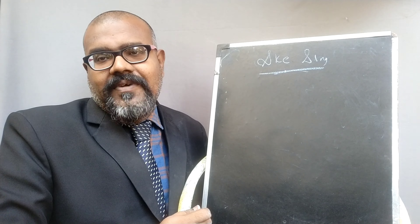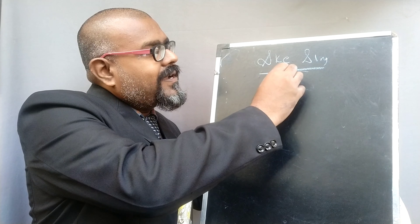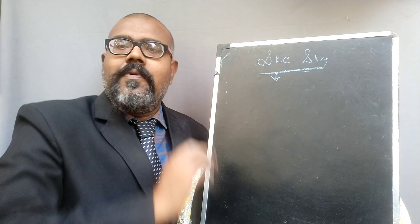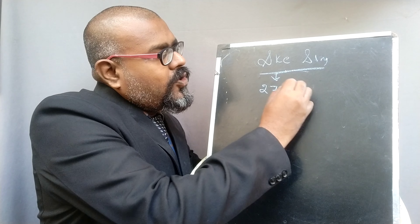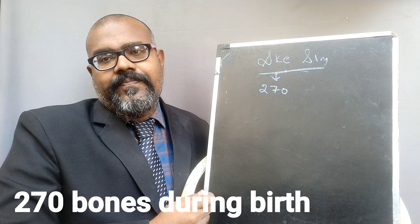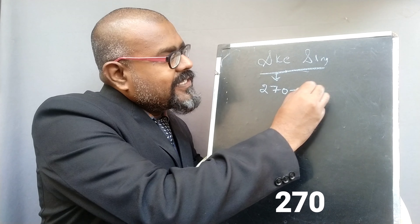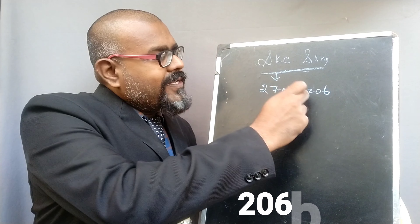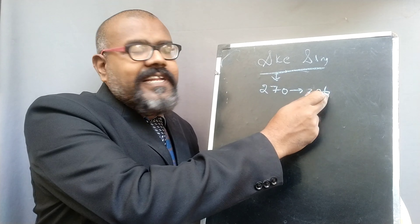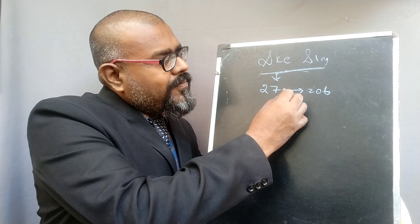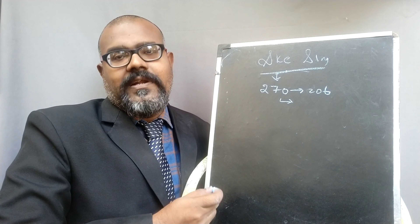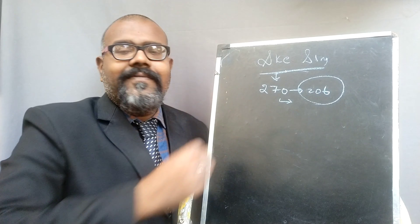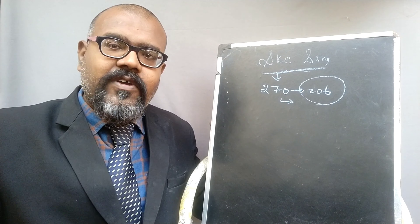Human skeletal system. The skeletal system is nothing but it indicates the bones. It includes so many bones. Totally in our body, there are 270 bones present. This particular number is reduced to 206 during adult age, because some of the bones are fused together. So, totally for an adult, we have 206 bones in our human body.